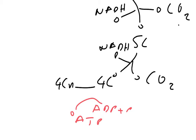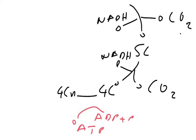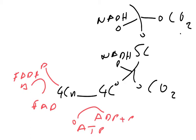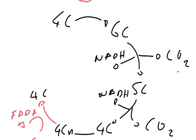That four-carbon compound then loses another electron, which goes onto a slightly lower energy carrier molecule called FAD, and this becomes reduced, becoming FADH. This four-carbon compound then gets turned back to produce the original four-carbon compound, and at the same time we lose another NAD, becoming NADH.